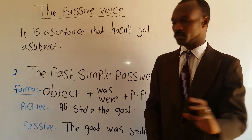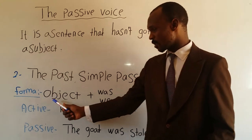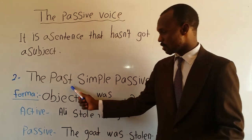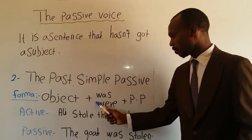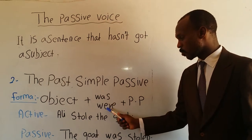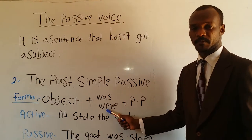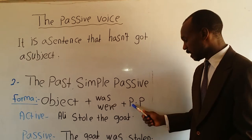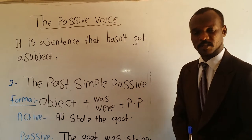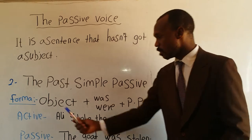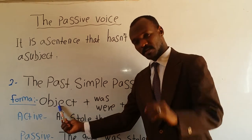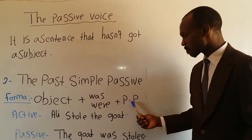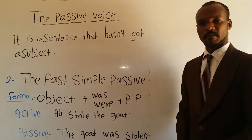So just focus on the rule, the formula. It says: object — remember something, because without subject — object plus was or were. This is the past, or past of the verb 'to be.' Plus PP, the past participle. Remember that. Object plus was or were plus past participle.